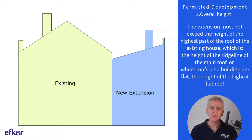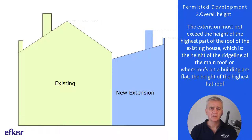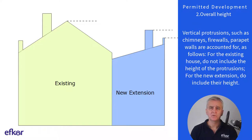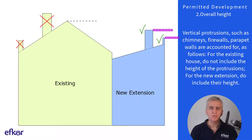Condition two: overall height. The extension must not exceed the height of the highest part of the roof of the existing house, which is the height of the ridgeline of the main roof, even though there may be other ridgelines at a lower level. Or, where roofs on a building are flat, the height of the highest flat roof. Vertical protrusions such as chimneys, firewalls, and parapet walls are accounted for as follows: for the existing house, don't include the height of protrusions; for the new extension, do include their height.